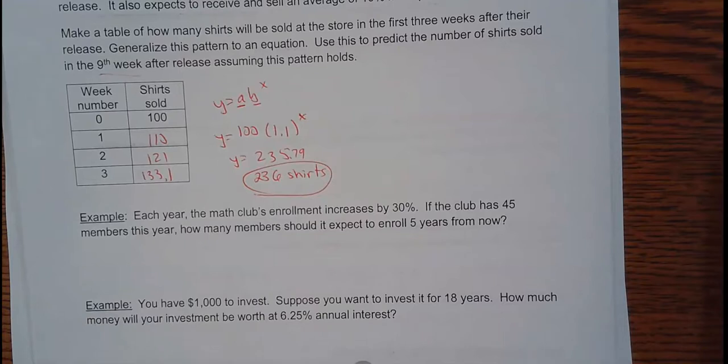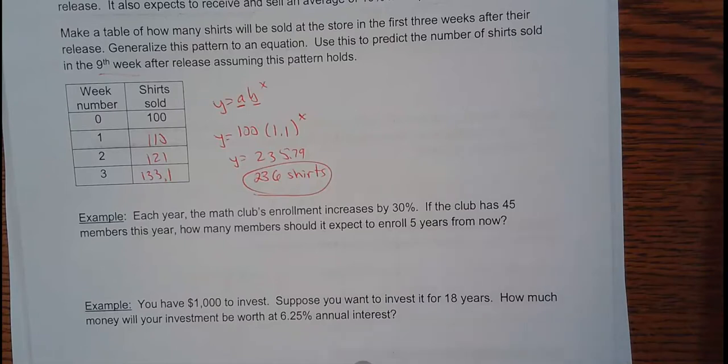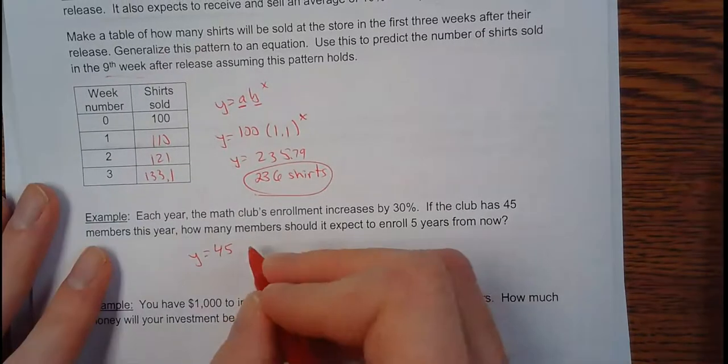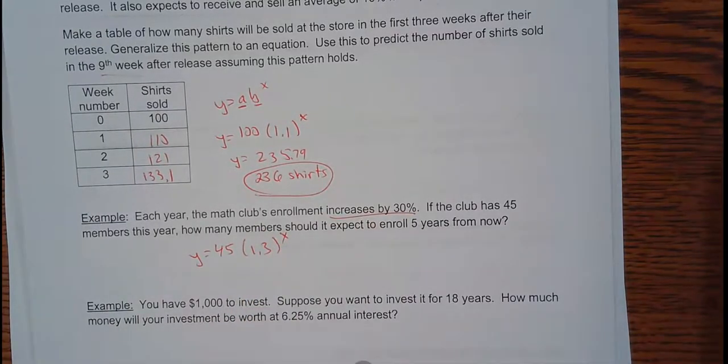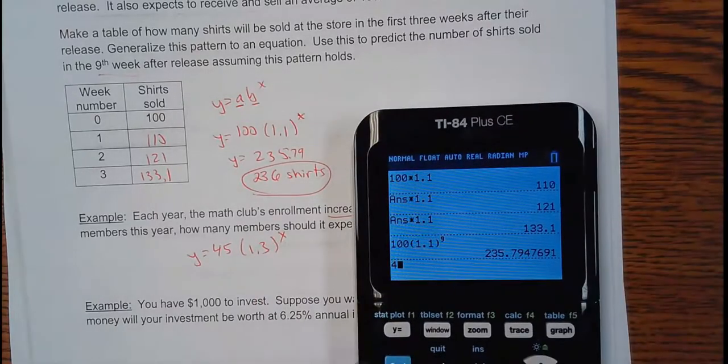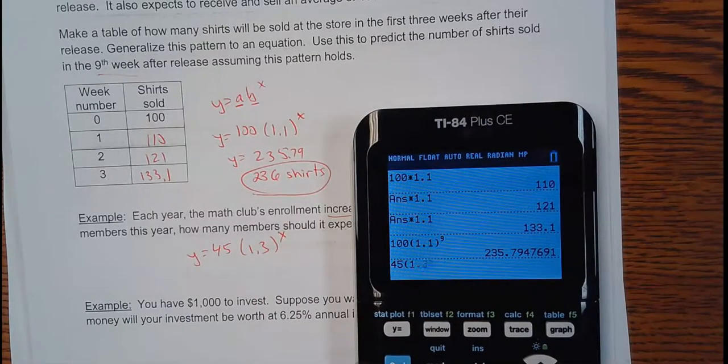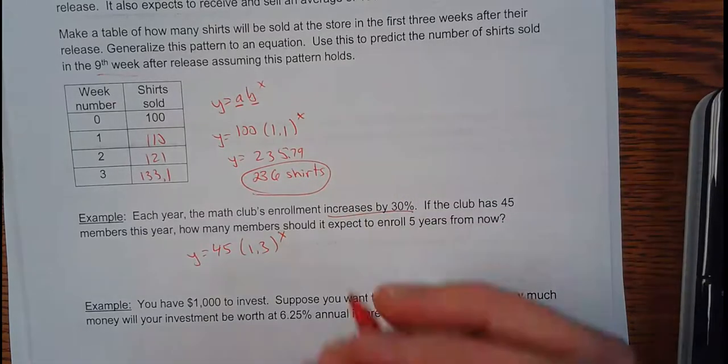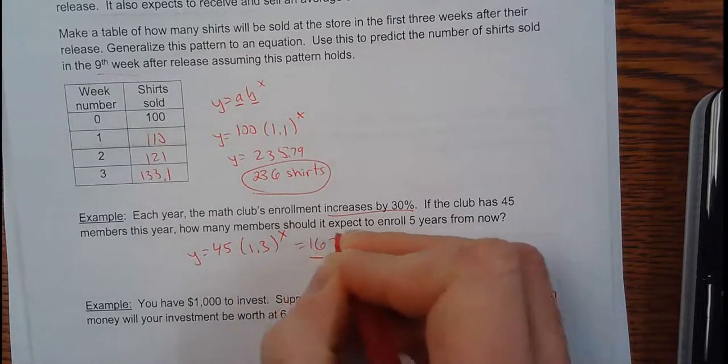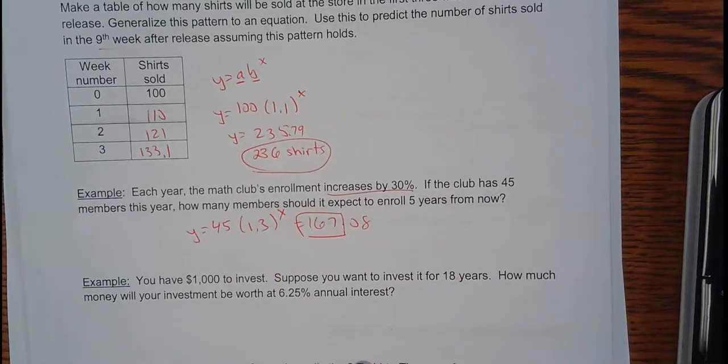Each year, the math club's enrollment increases by 30%, because it's getting so popular. And if the club has 45 members this year, how many members would expect to enroll five years from now? We don't have to make a table here. We're going to say, what's the initial value? The initial value has 45 members right now. And then, it goes up by 30%. An increase of 30%. Well, that's a 1.3. And if I want to know five years from now, plug a five in there. So, I got 45 times 1.3 to the fifth power. I got 167.08. Basically, 167 is the enrollment. You can't have 0.08 of a person.